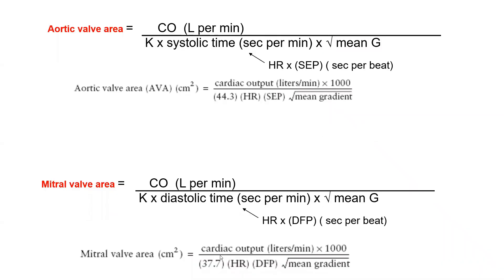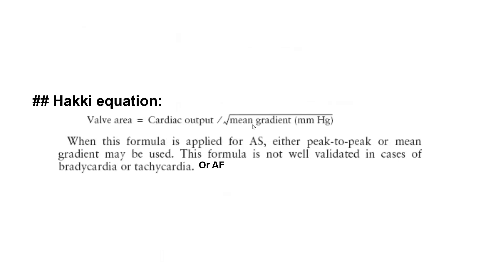An important observation from the 1980s is that the three terms — the constant, heart rate, and systolic ejection period — when multiplied, often cancel out and equal 1,000, both for aortic and mitral valve area. This led to the simplified Hackey equation: valve area equals cardiac output divided by the square root of mean gradient. All other factors cancel each other. Cardiac output divided by the square root of mean gradient — that is the Hackey equation.